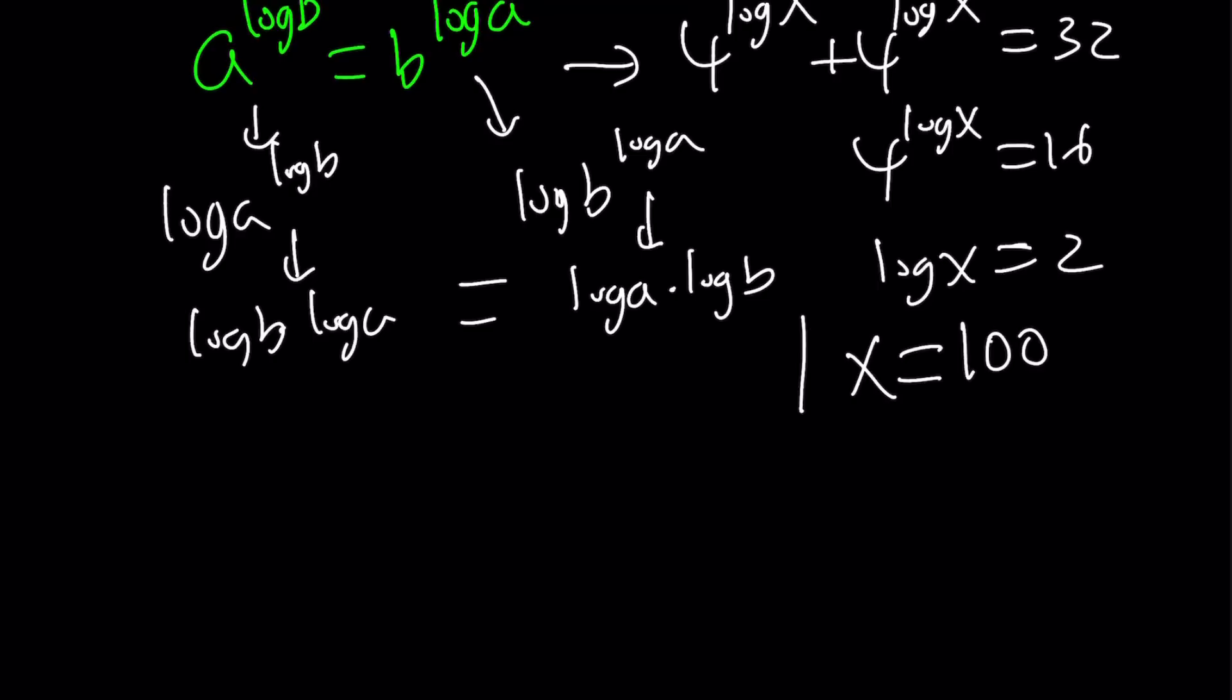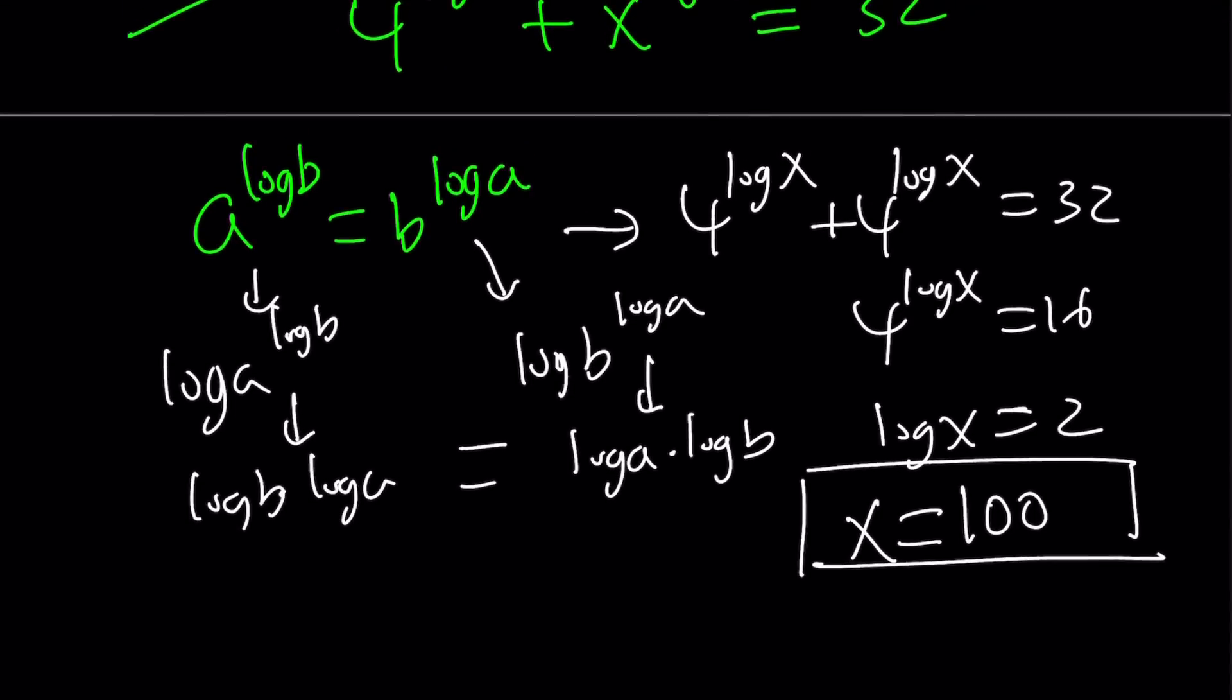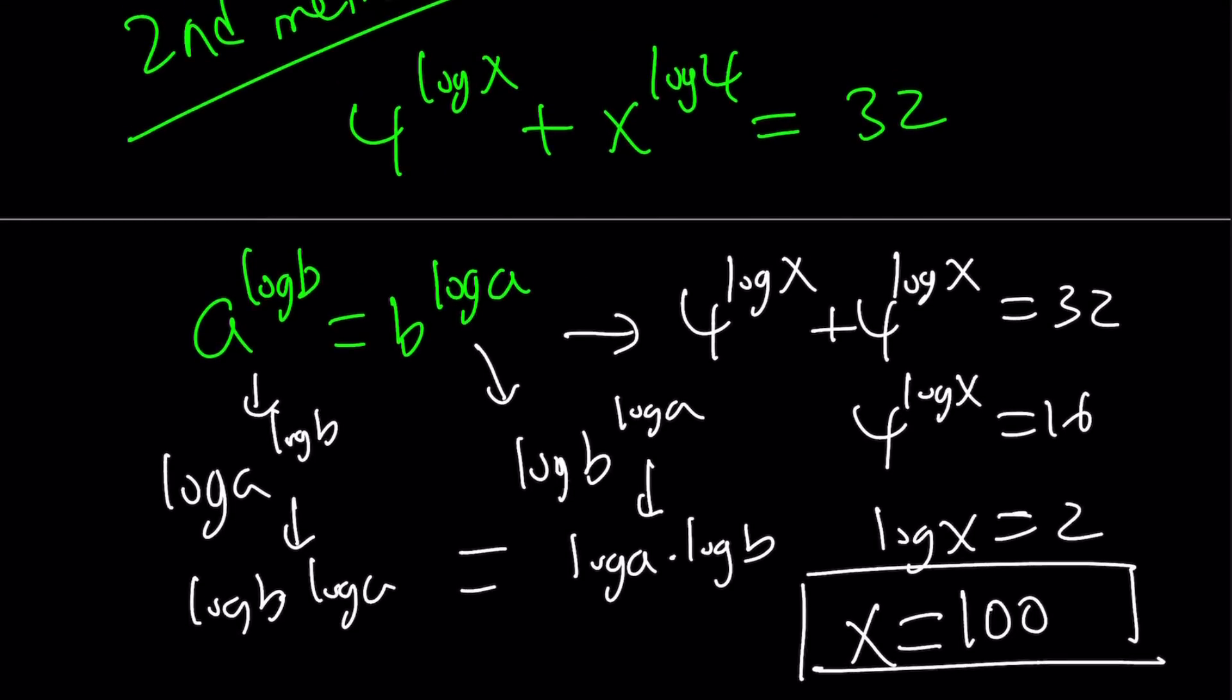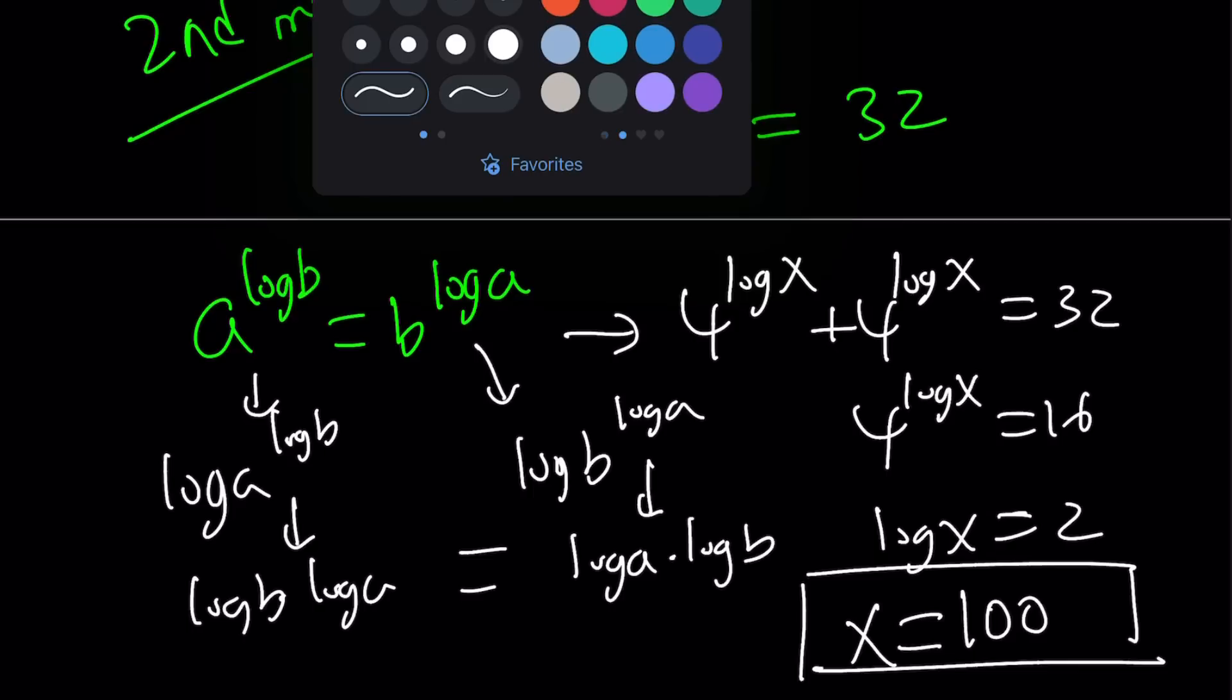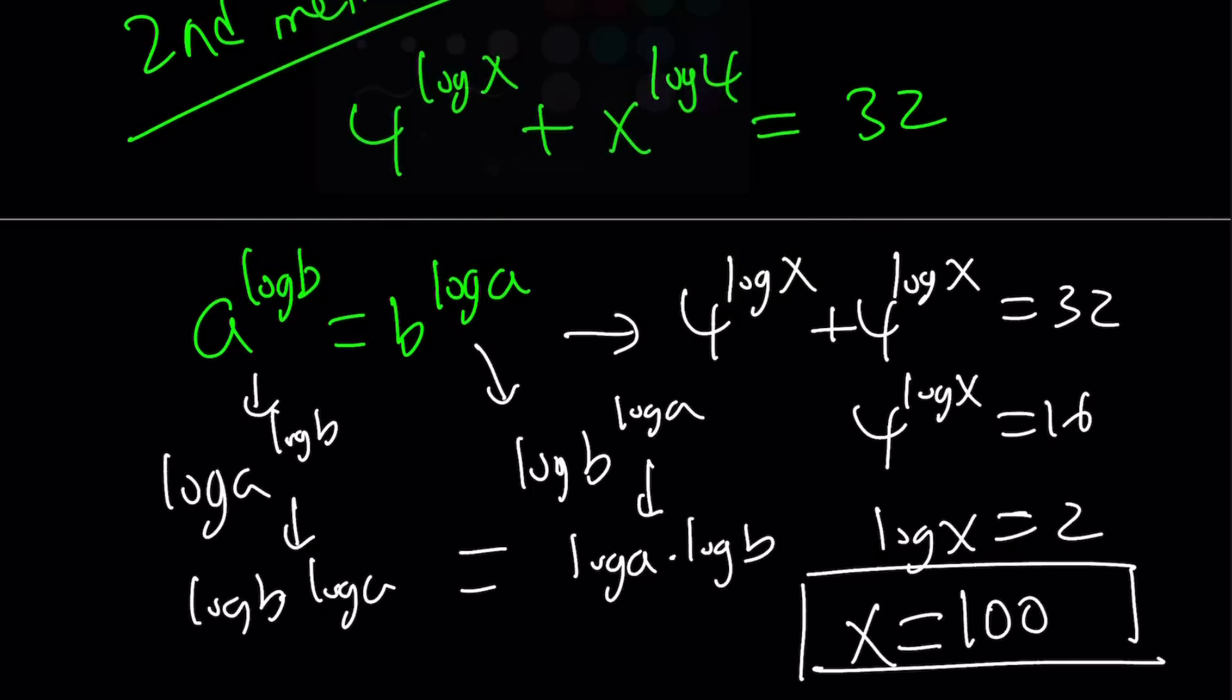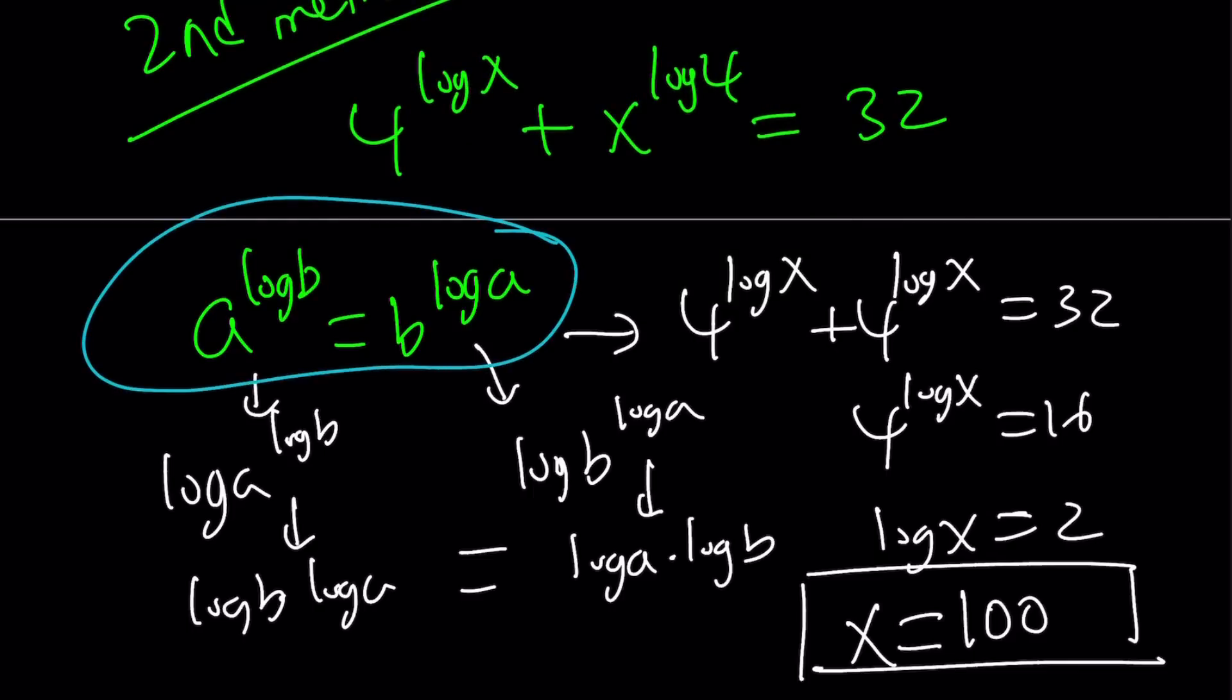Alright? Does that make sense? Hopefully it does. So let me recap what we just did. We used the really nice cool property that a to the power log b is equal to b to the power log a, right here. And that is perfectly what we have, and so those two things are equal, alright? It's just a little trick that we use in these kinds of problems, and then from there, we easily get the answer.